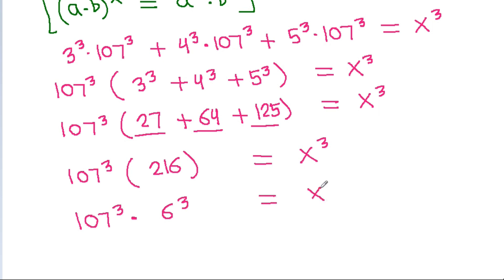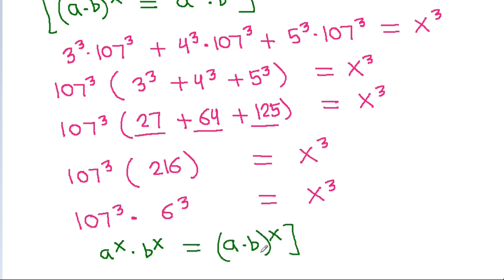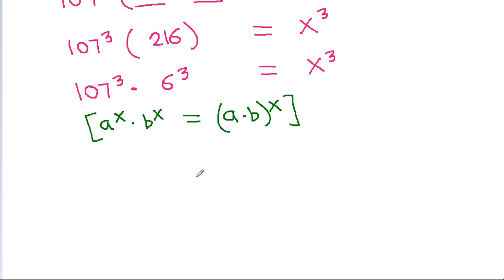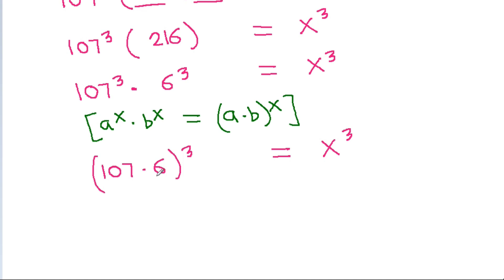And using the rule a raised to x times b raised to x equals a times b raised to x, it will be 107 times 6, all cubed, is equal to x cube. And 107 times 6 is 642, so 642 cube is equal to x cube.